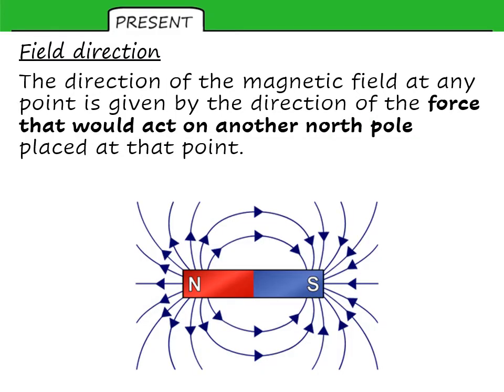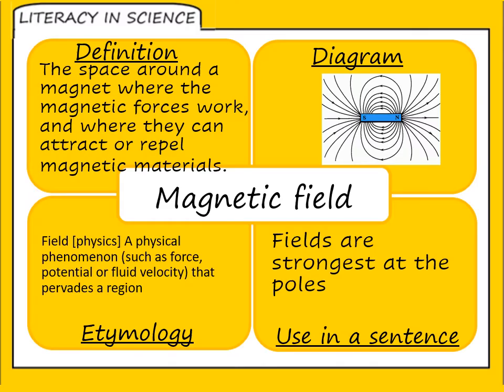The field direction, this is defined as the direction of the force that would act on another north pole placed at that point. So placing a north pole here would receive a push to the left. One here would be pulled towards that south pole. And one down at the bottom would be pushed to the right. So reminding ourselves the definition of a field that is the area or space around a magnet where magnetic forces work, where they can attract or repel.